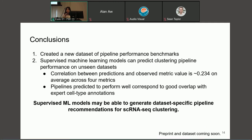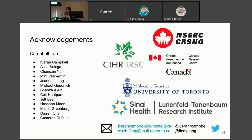So in conclusion in this project we have created a new dataset of pipeline performance benchmarks, which we have also used to build the supervised machine learning models that we have shown can predict clustering pipeline performance on unseen datasets with significant correlation with the observed metric values. As well our pipelines that we predict to perform well do correspond to good overlap with expert cell type annotations. So we hope that this work leads to the exciting possibility that one day supervised machine learning models may be able to generate dataset-specific pipeline recommendations for single cell RNA sequencing clustering to take the guesswork out of the picture for practitioners. And yeah, thank you so much for listening.